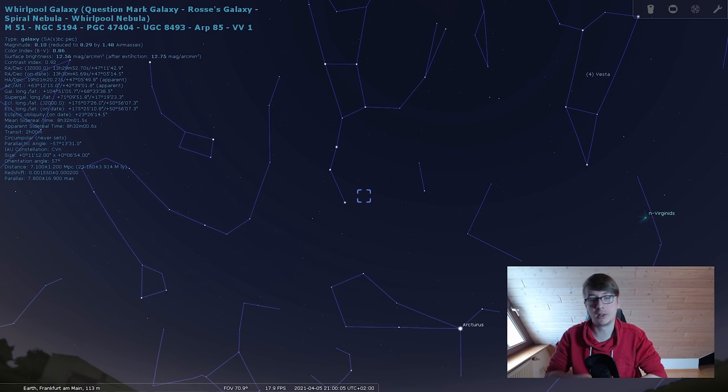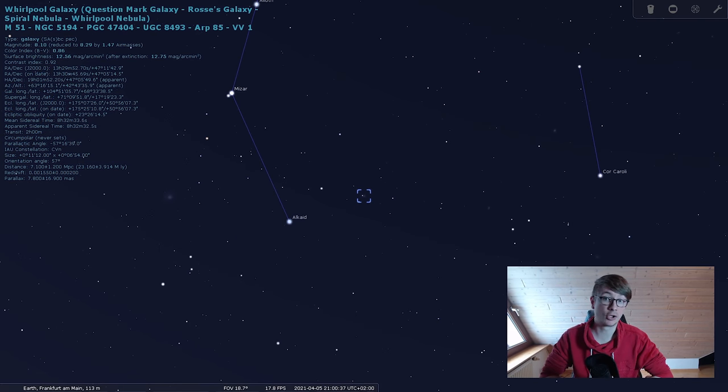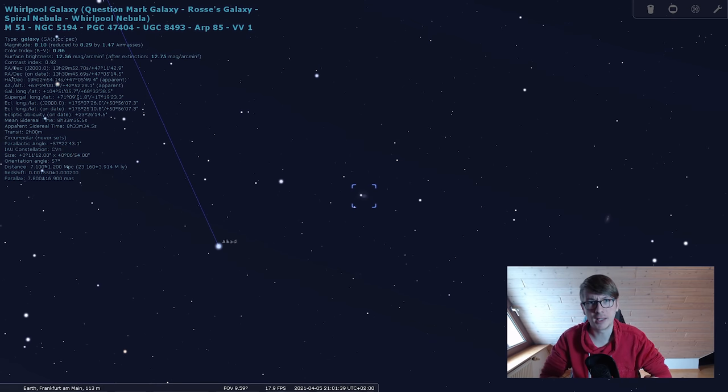Here we have the Whirlpool Galaxy. The first recorded observation was on October 13th, 1773 by Charles Messier. At this point I wonder if there is an object Messier did not discover. If you could travel at the speed of light, the fastest speed possible, it would take you 31 million years to get there. That's what Wikipedia says.